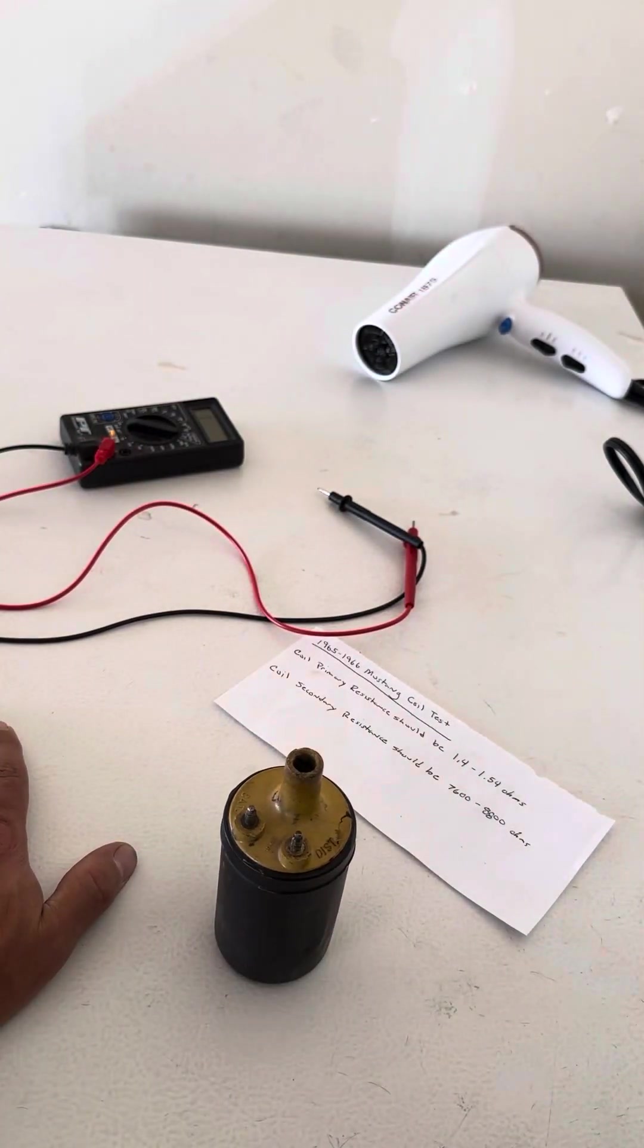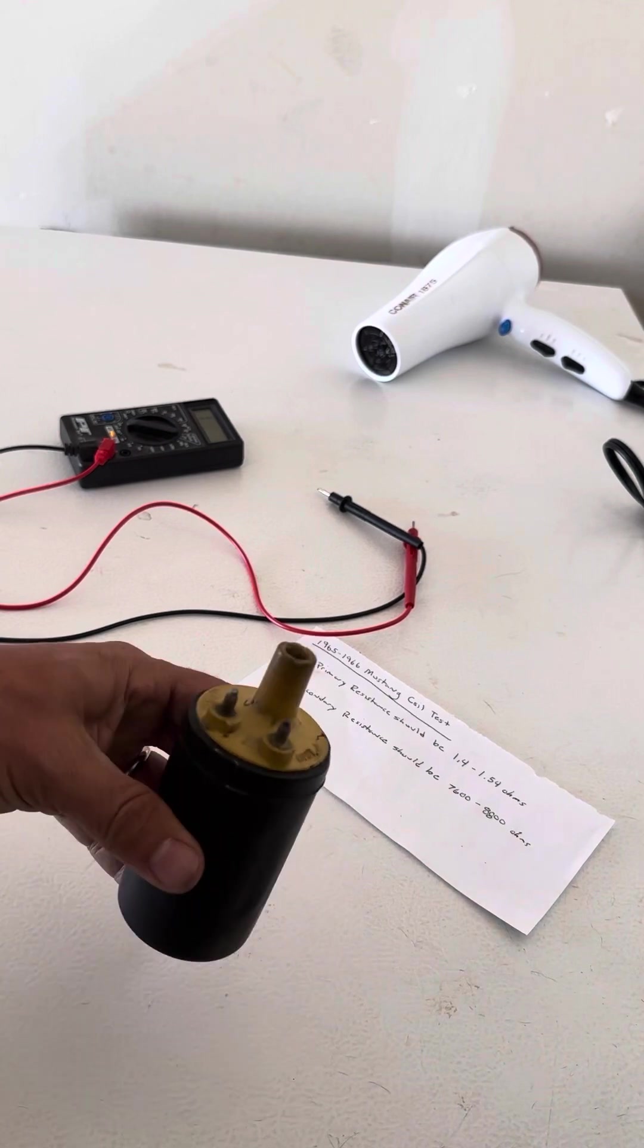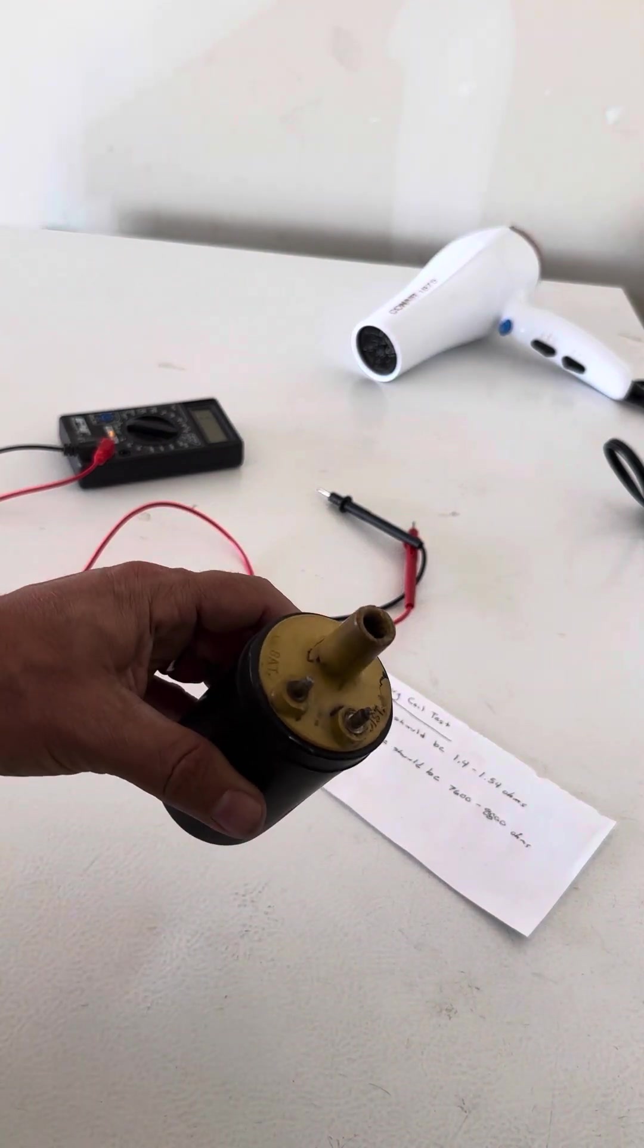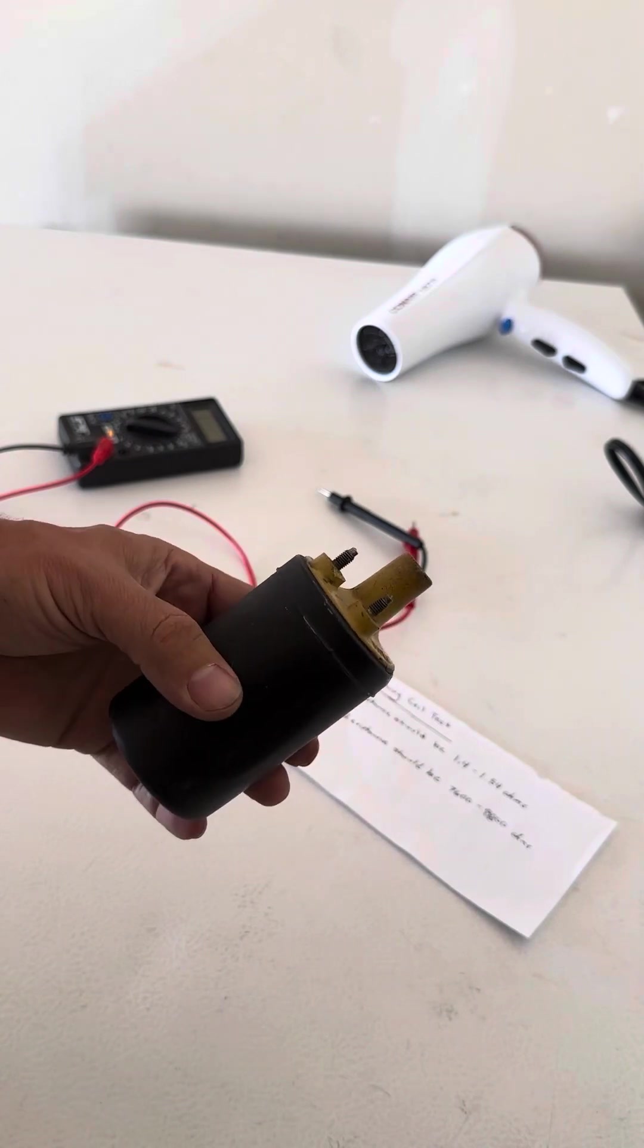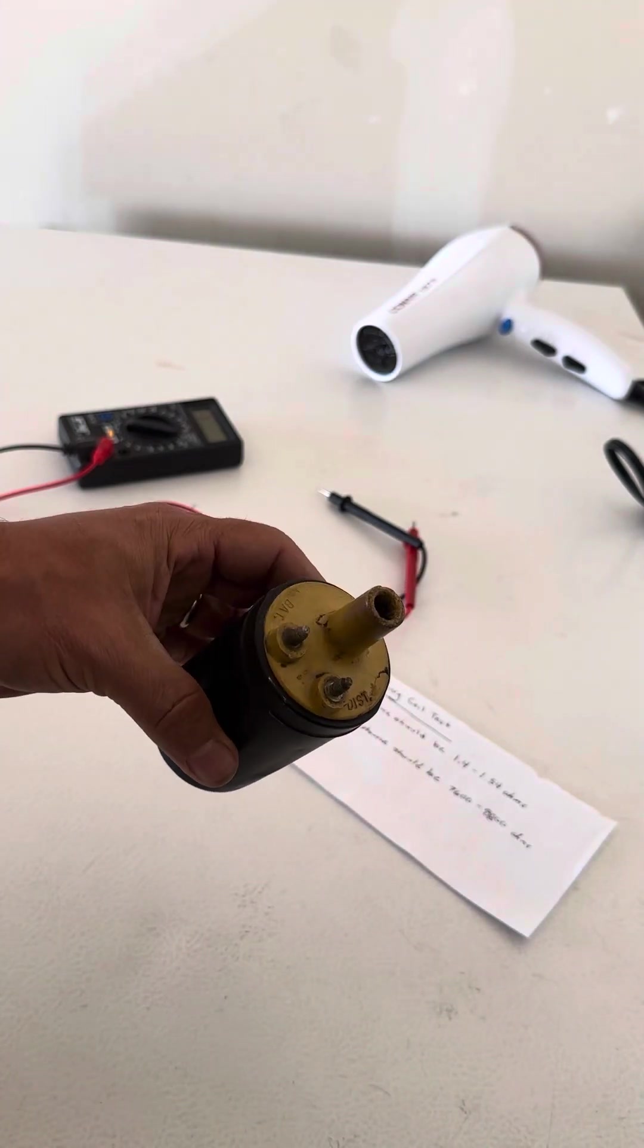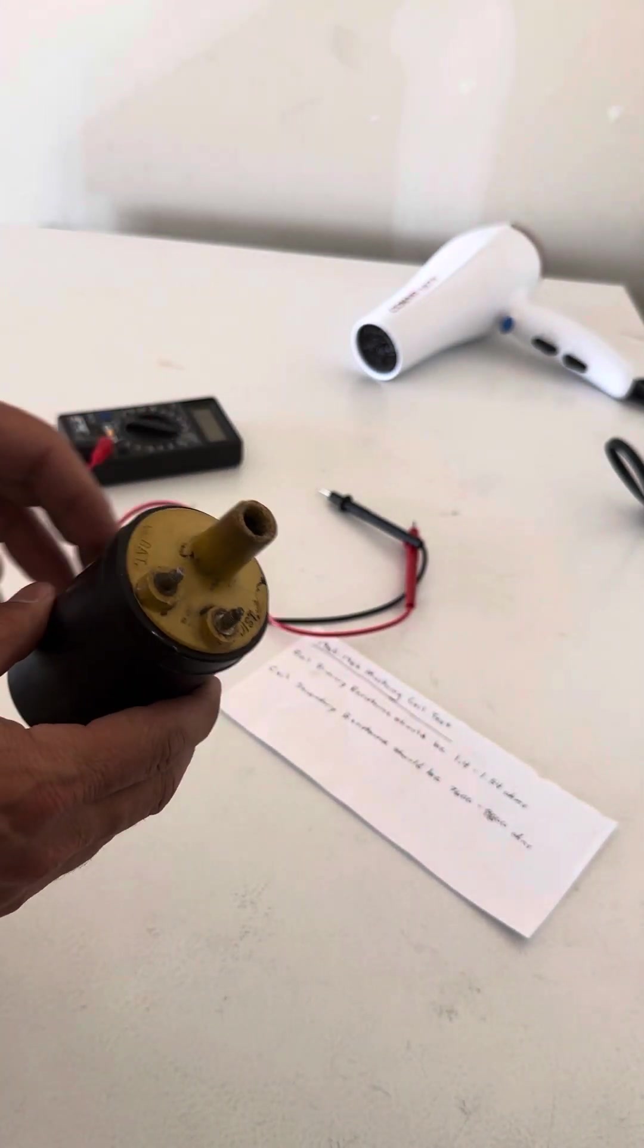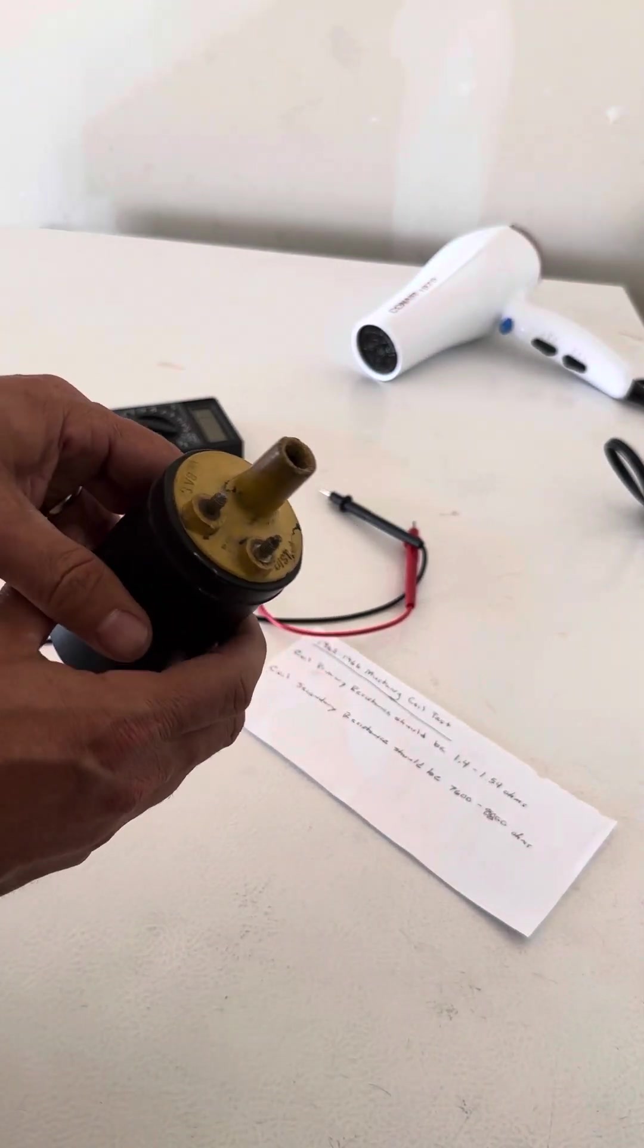Just wanted to make a quick video on how to test the coil to see if your coil's bad. This is my original coil on my 66 Mustang and I thought I was getting some ignition issues.